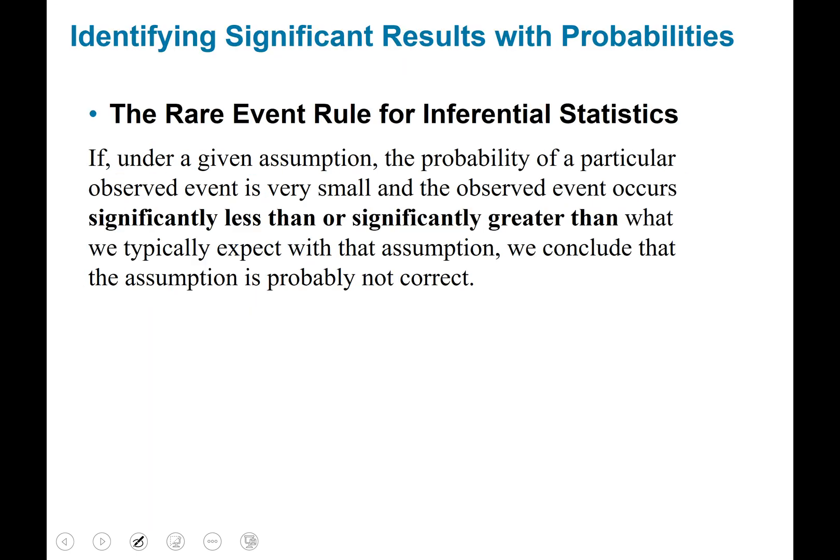Okay identifying significant results with probabilities. So the rare event rule for inferential statistics is if under a given assumption the probability of a particular observed event is very small and the observed event occurs significantly less than or significantly greater than what we typically expect with that assumption, we conclude that the assumption is probably not correct. That is the rare event rule.